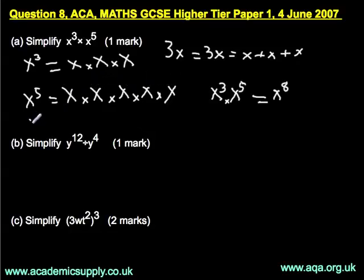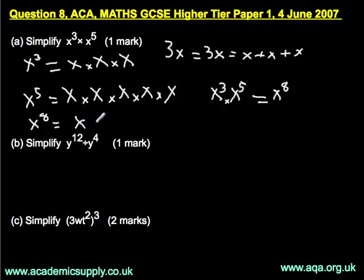If you did x to the power of 8, then there would be 8 x's multiplied together. I won't write them all out — it'll take too long — but there would be 8 multiplied together.